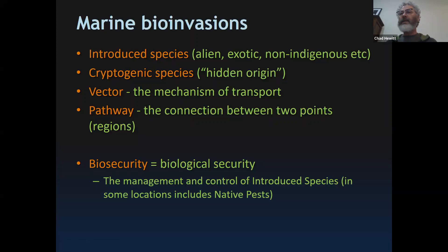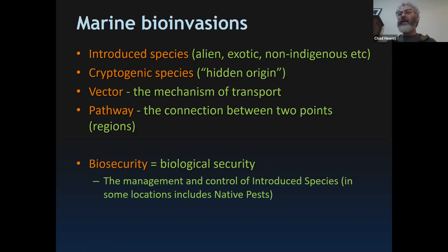Even Darwin, in his voyages around the world, most likely was on a vessel that transported many species into new locations, including the Galapagos Islands. A vector is the mechanism of transport and a pathway is the connection between two points or regions. In the marine context this is how we define them, but in biosecurity for terrestrial systems or pandemics like COVID, 'vector' can refer to an individual transporting material and the pathway might be aerial transmission.